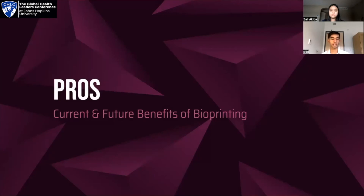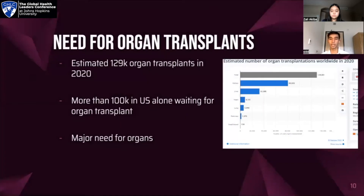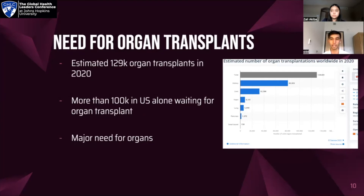Now that you have a basic understanding of bioprinting, it's important to consider the pros and cons and the current and future benefits and disadvantages. The main application where bioprinting can do the most good is through organ transplants. In 2020, approximately 129,000 organ transplants happened worldwide. However, the number of people waiting far overshadows this — more than 100,000 people in the US alone are waiting for an organ transplant. Many of these are life-saving operations, establishing that there is a major need for organs, which brings us to bioprinting's applications within organ transplants.